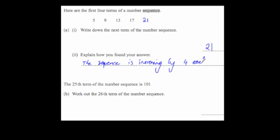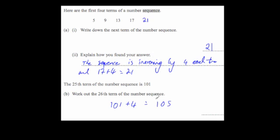Now it says the 25th term of the sequence is equal to 101 — work out the 26th term. Since the 25th term is 101 and the sequence increases by 4 each time, to go up one more term you just add 4. So 101 plus 4 equals 105, and the 26th term is 105.